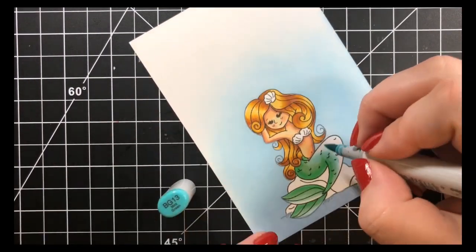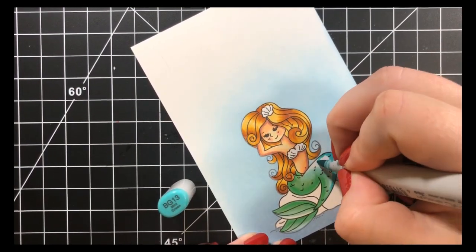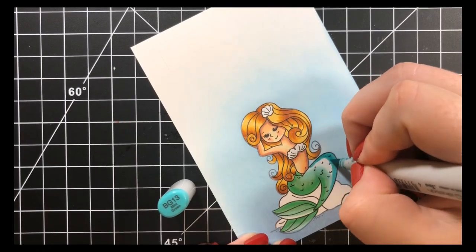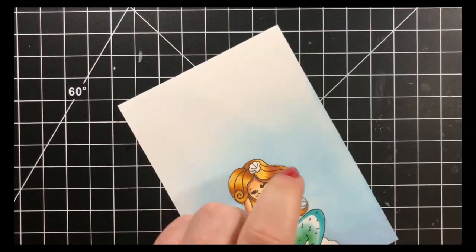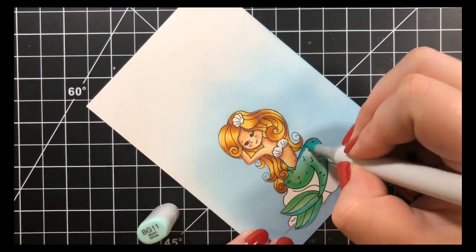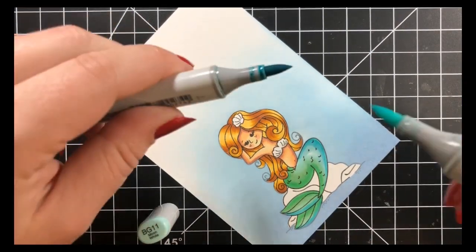I'll go in with my BG13 and this is where I'll put my darkest area for my BG markers which will be on the right side. Going back in with my BG11 to blend that out. These two can be hard to blend sometimes.